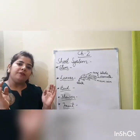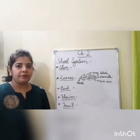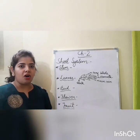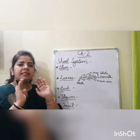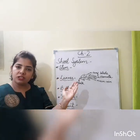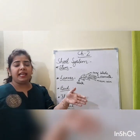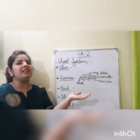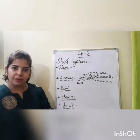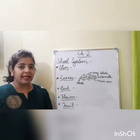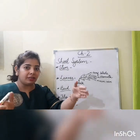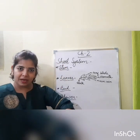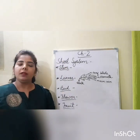Some plants have very thin stem and some have thick stem. Big plants like the banyan tree have very thick stem. They have bark on their stem, and bark is the outermost covering of the stem. The thick stem with bark is known as trunk.